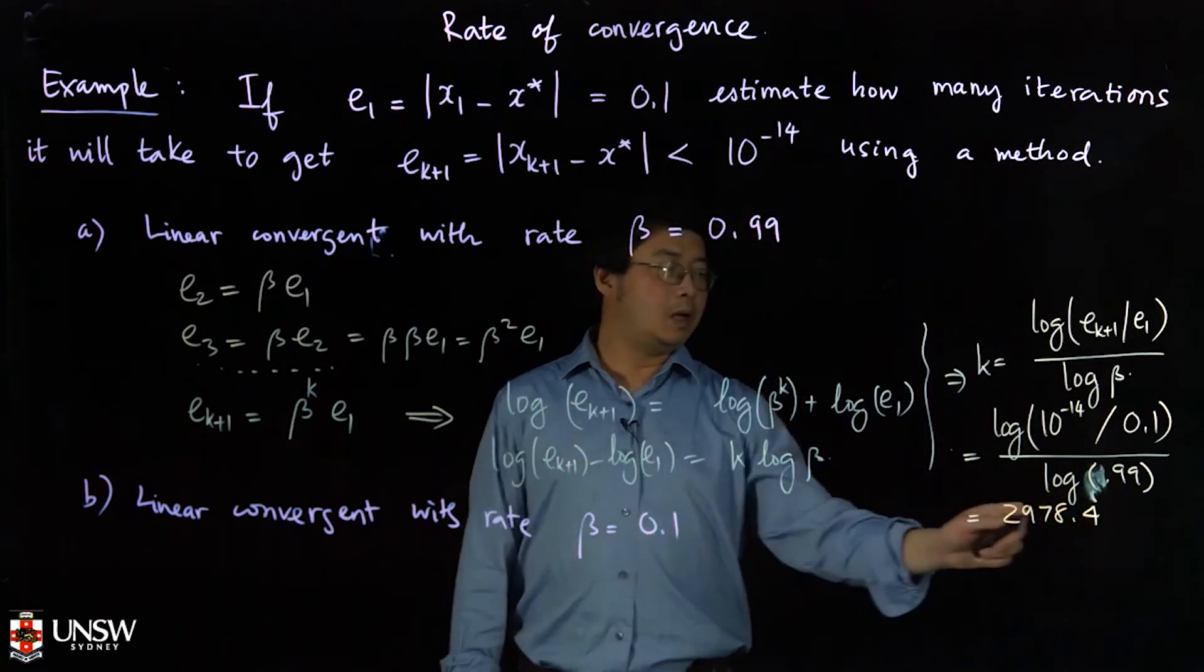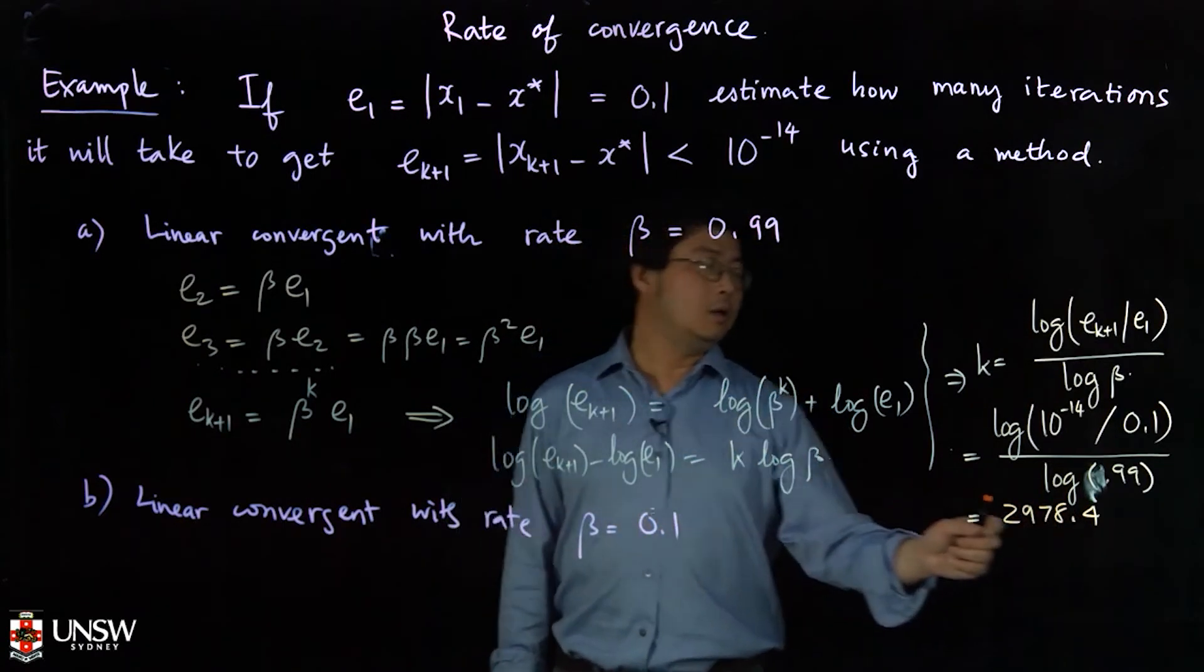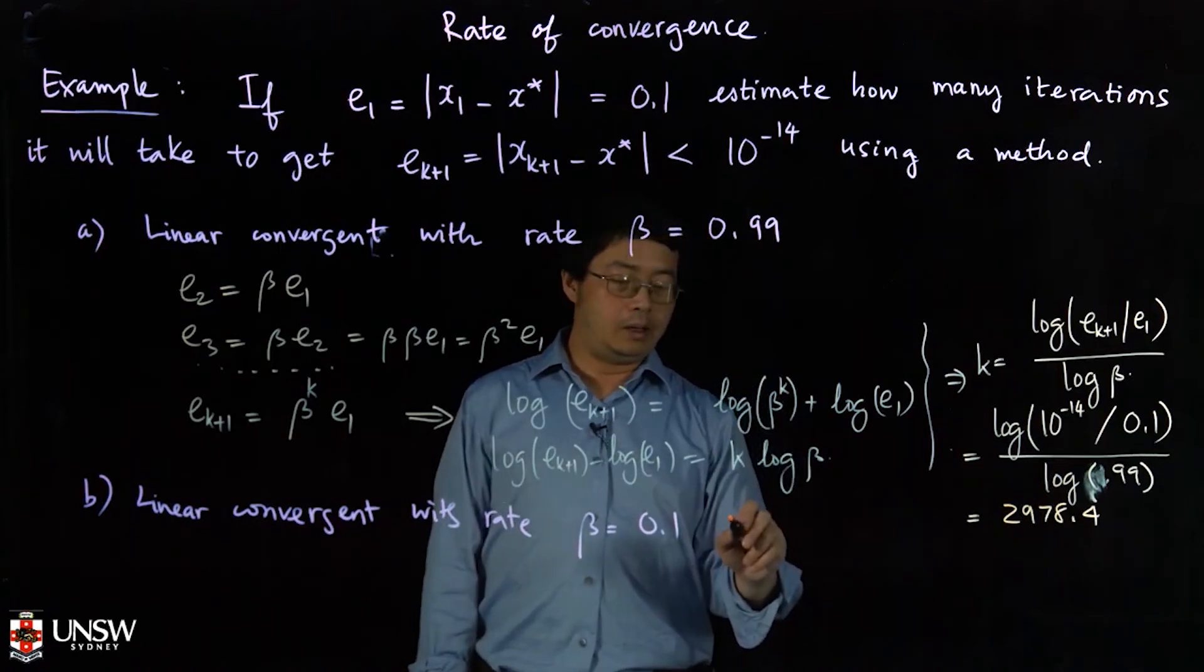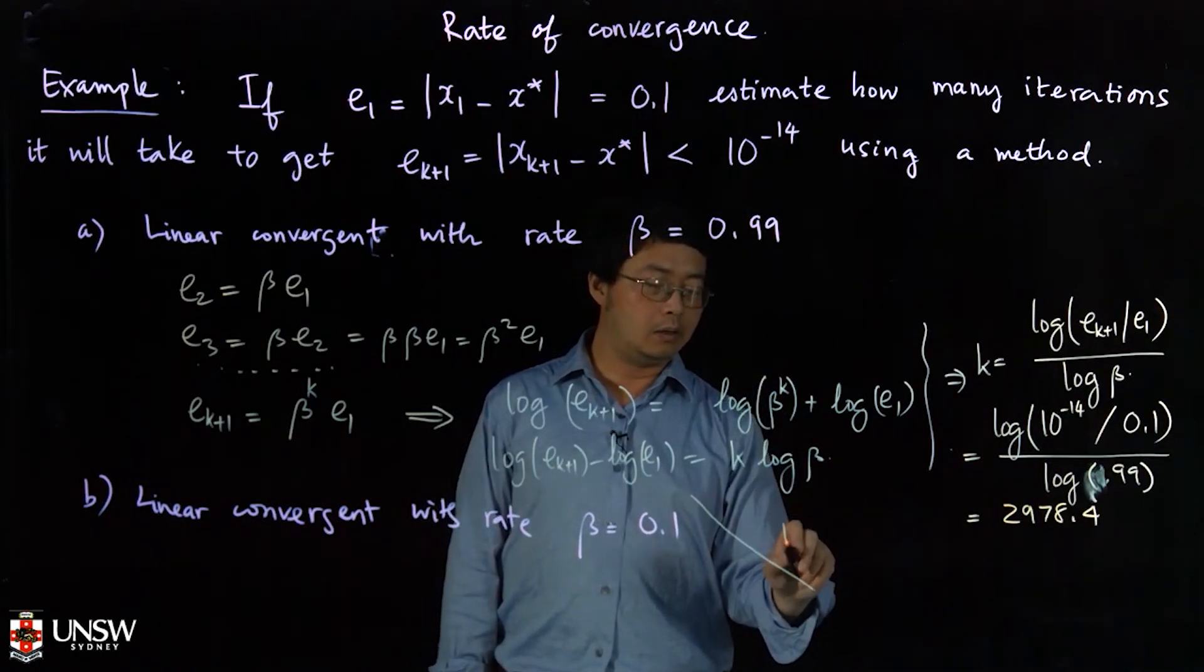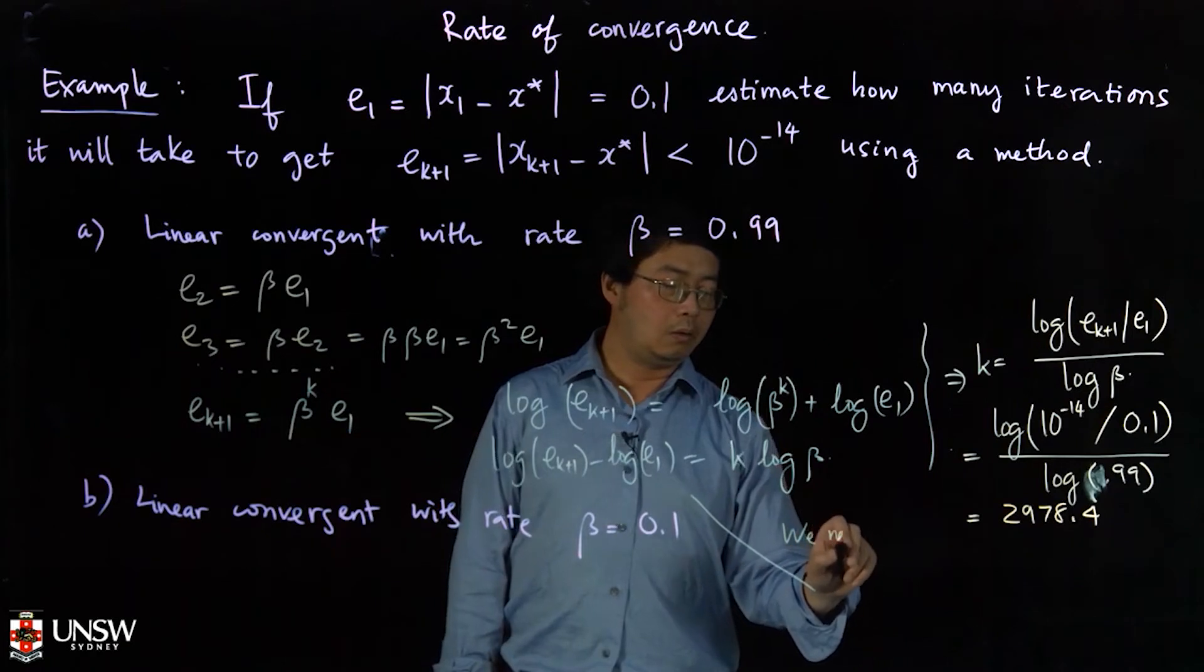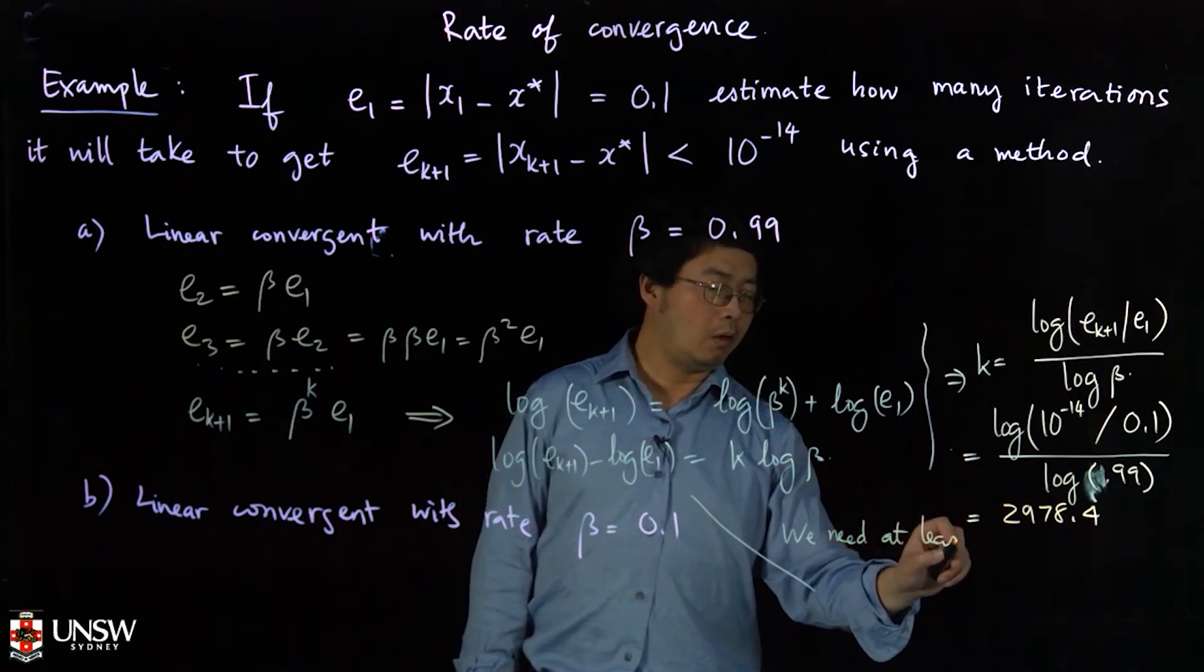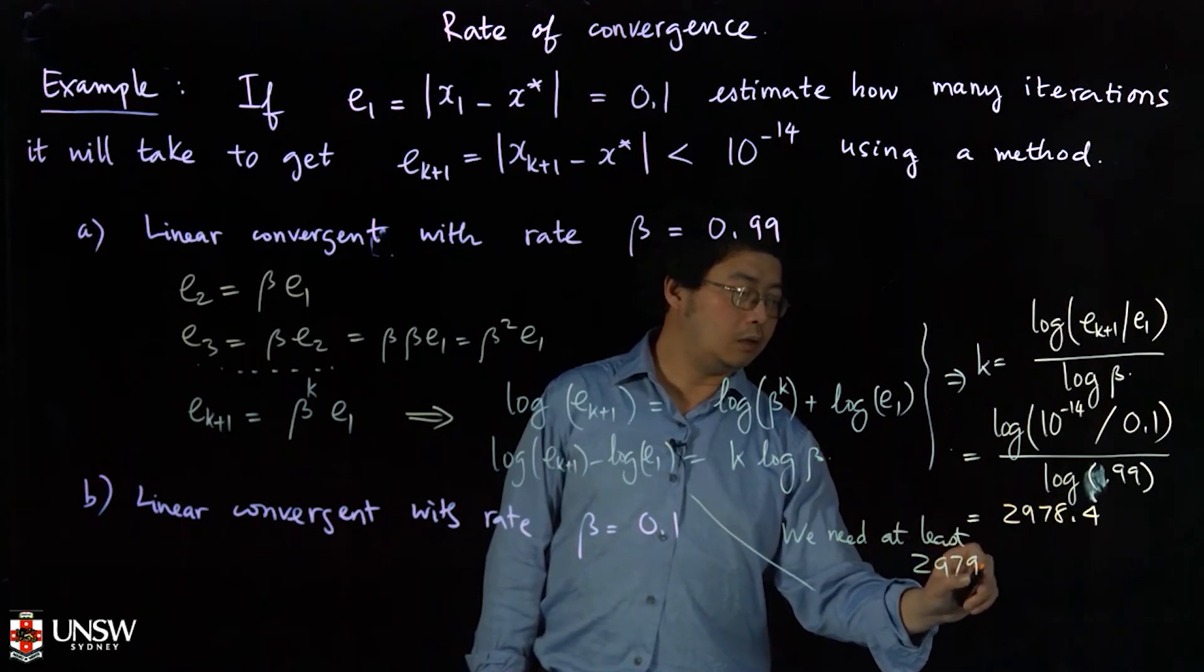It means that, because the iteration has to be integers and here we have to round it up, so at least in this case we need at least 2979 iterations.